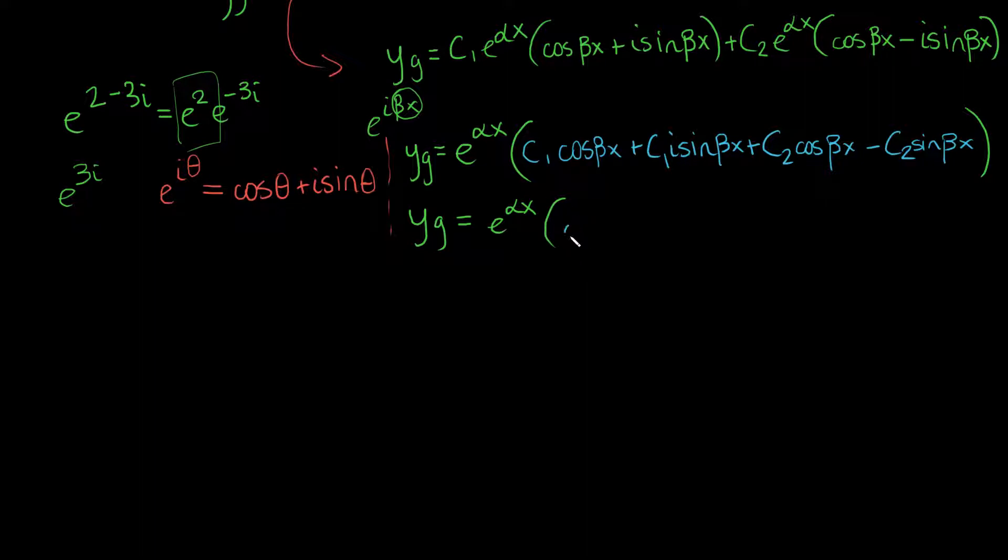and now we factor out a cosine. So, we get cosine of beta x times, and now we have c1, I'll change colors once again just to make it even more visible, c1 here plus the second one is c2, plus c2. And then plus the sine of beta x times, and now we have this second thing here. We have the i times c1 minus i times c2.